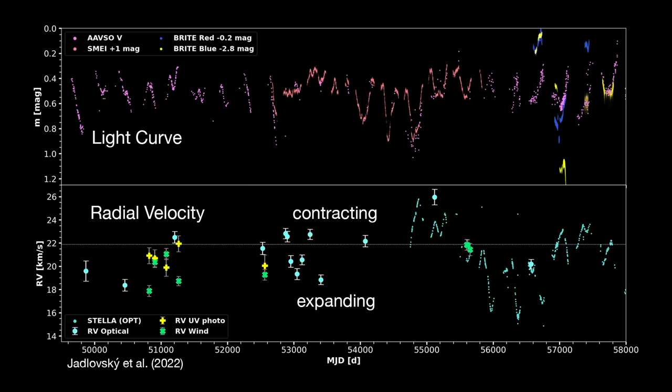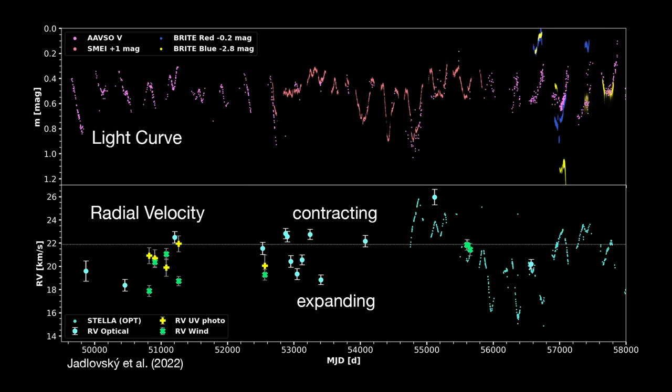But Sayo isn't the only one who thinks the 2200-day period is real. Others cite changes in Betelgeuse's radial velocity over a similar period. And that suggests it really is growing larger and expanding, and then smaller as it contracts over time. As for Sayo's model not taking dust into account, is that really a problem?